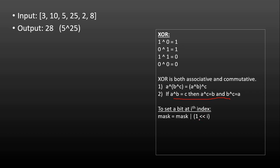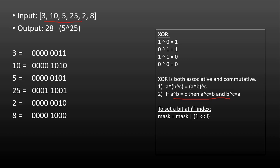Let me represent the binary representation of the numbers in our array. The numbers are 3, 10, 5, 25, 2, 8, and I'll show their binary representations. What we need to find is two numbers whose XOR gives the maximum result.